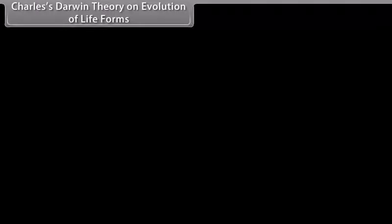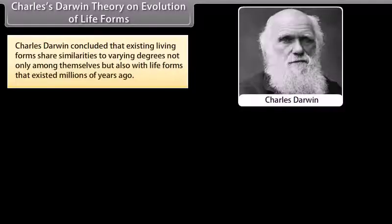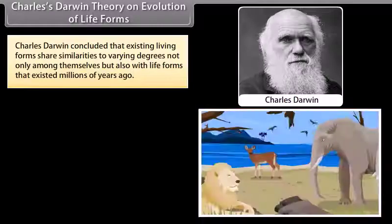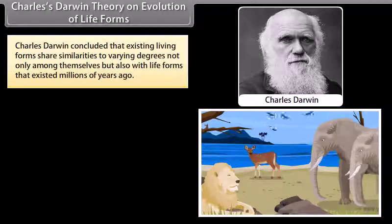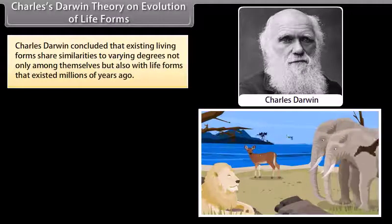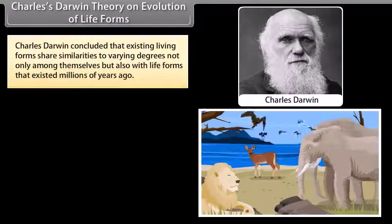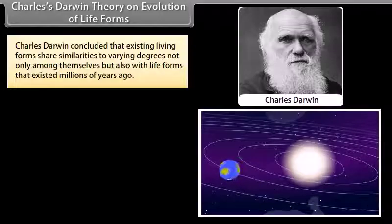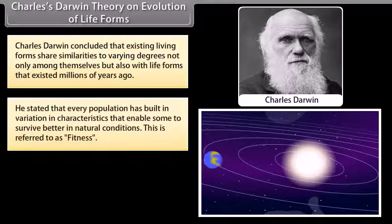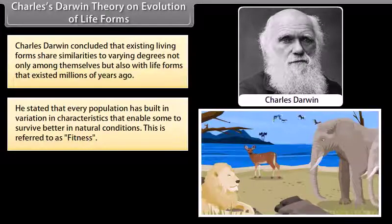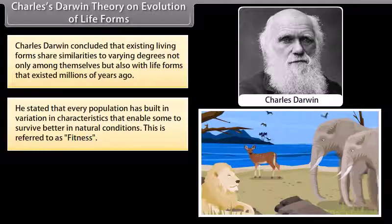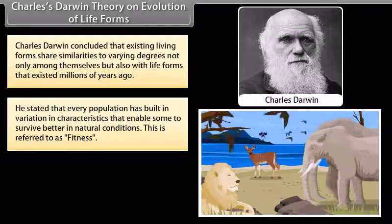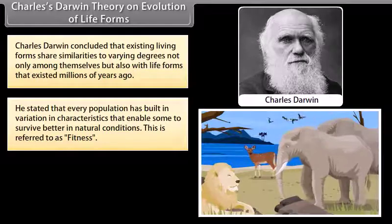Charles Darwin theory on evolution of life forms. Charles Darwin concluded that existing living forms share similarities to varying degrees not only among themselves but also with life forms that existed millions of years ago.